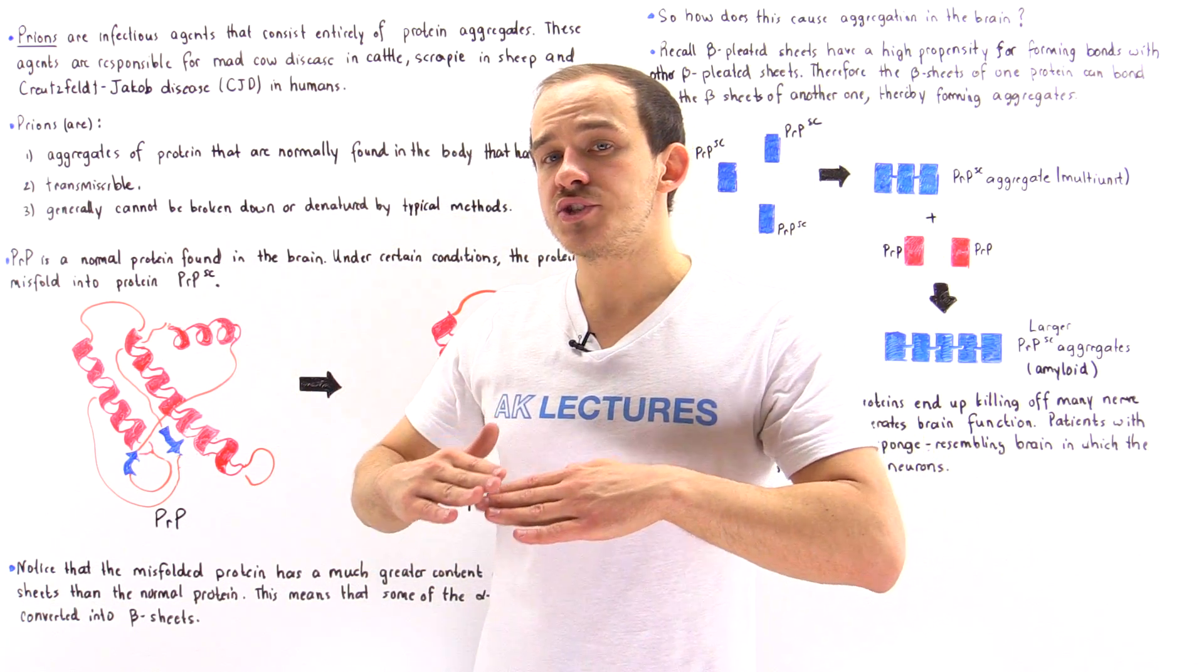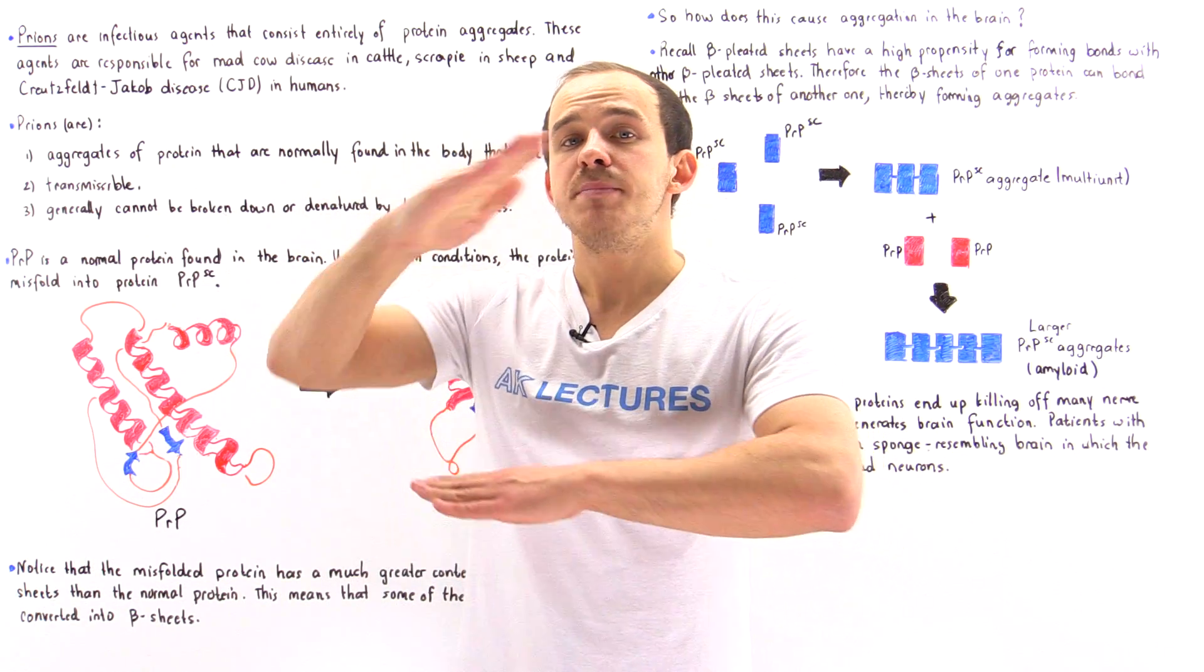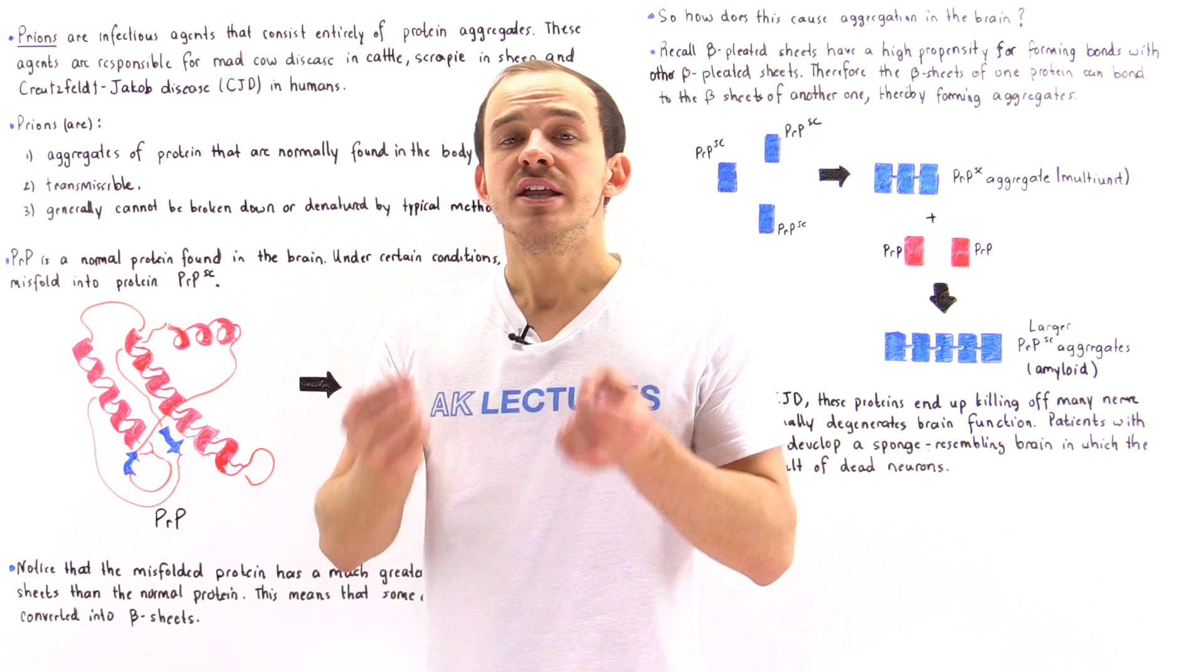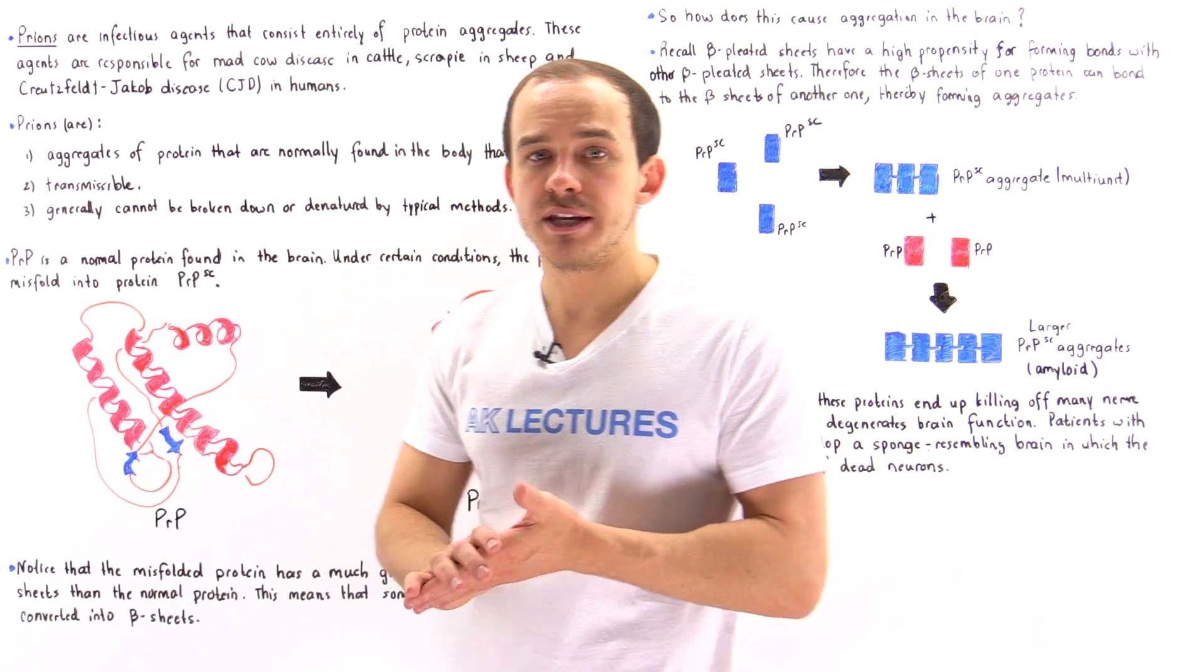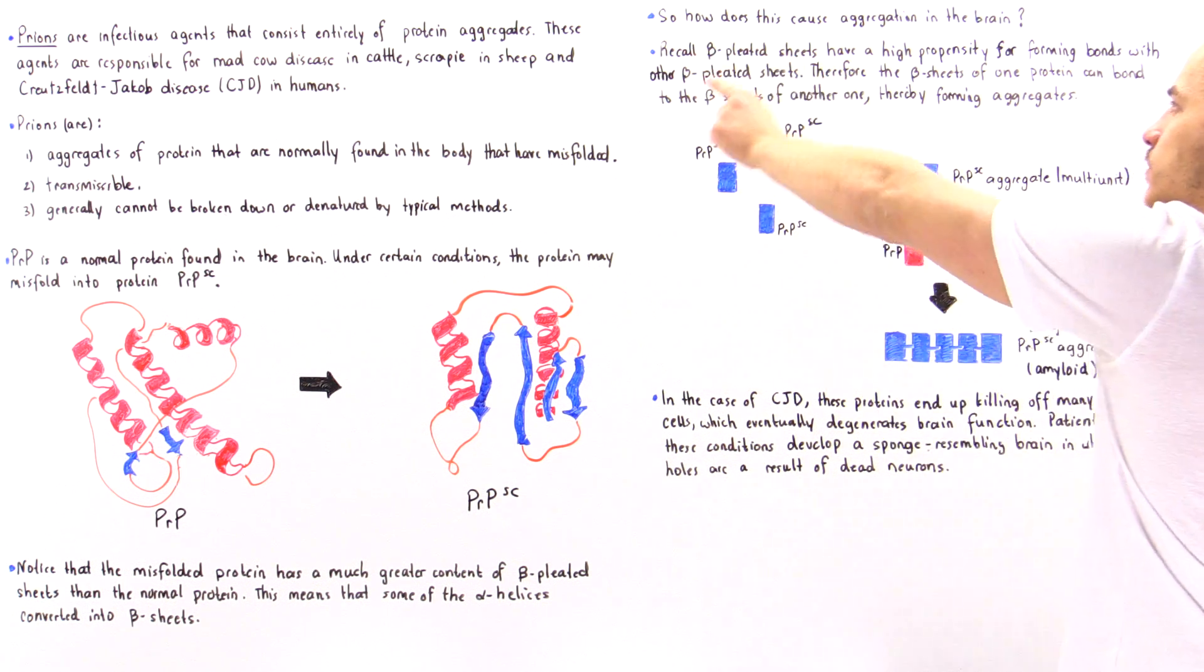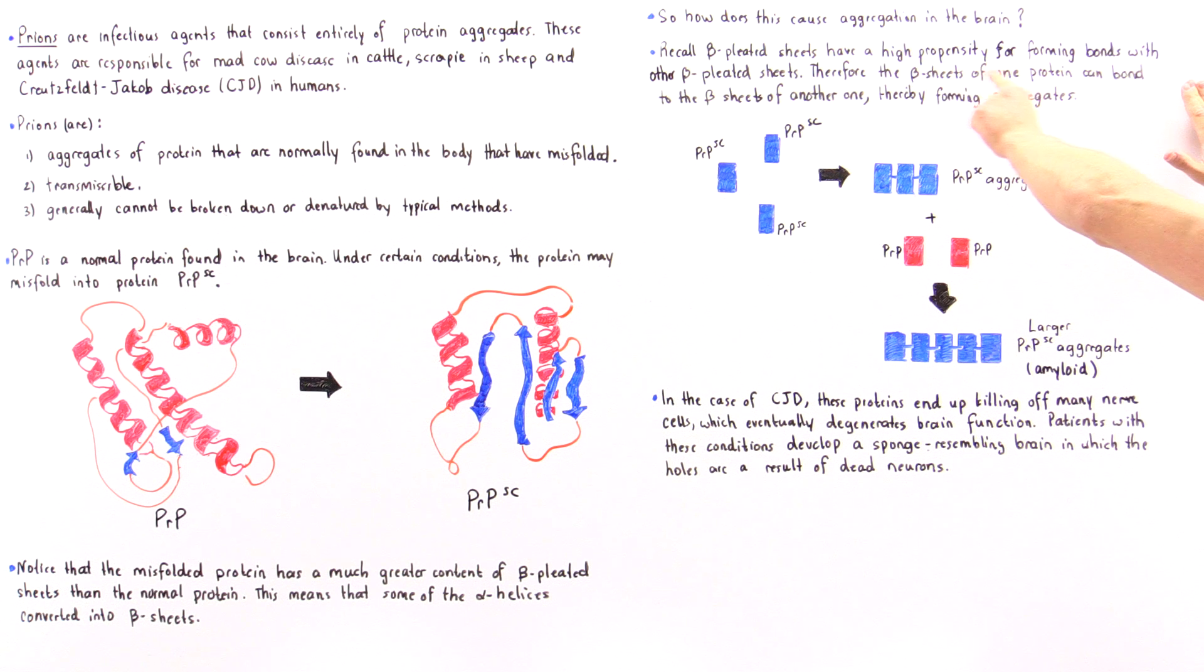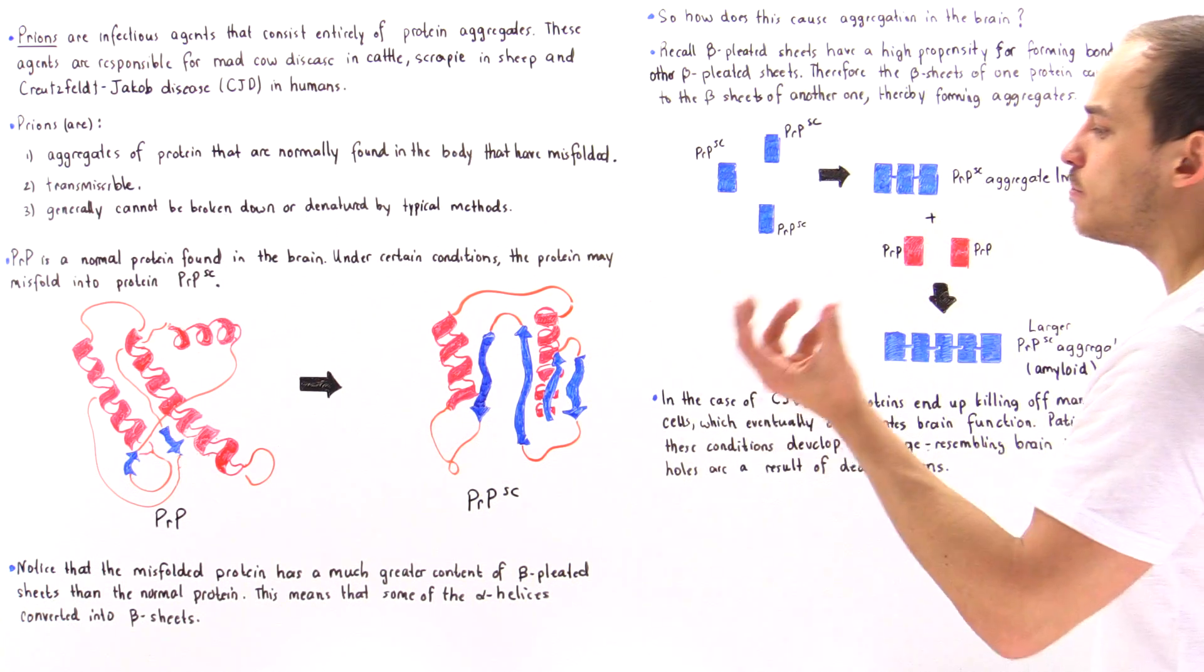These beta pleated sheets consist of linear polymers stacked on top of one another. Because they're stacked and linear, parallel with respect to each other, they have great potential for bonding to other beta pleated sheets via non-covalent bonds. Beta pleated sheets have high propensity for forming bonds with other beta pleated sheets. Therefore, the beta sheets of one protein can interact with the beta sheets of another protein to form aggregate molecules.